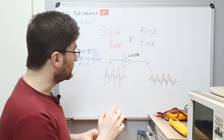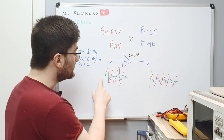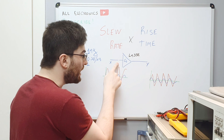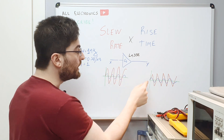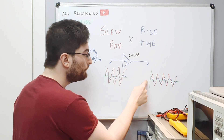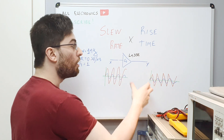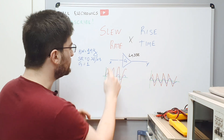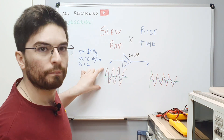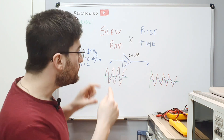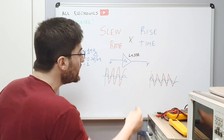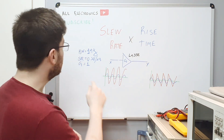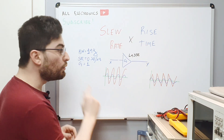For a linear system, any sinusoidal signal that enters the amplifier will be at the output with a different amplitude or phase. If we put a very large signal at the input, now we are trying to swing the output of the op-amp faster than the maximum slew rate.